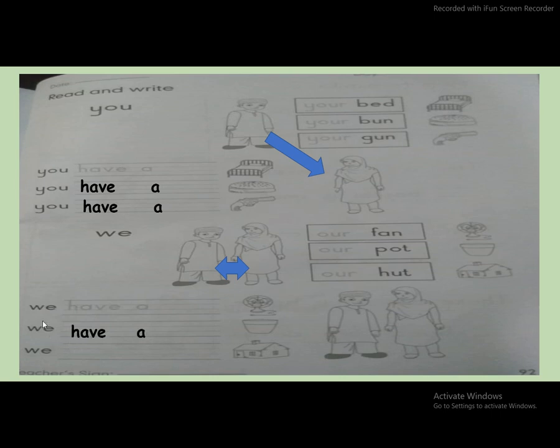Next, we have a pot. We have a pot. Next, we—what do you write here? We have a hut. Very good.